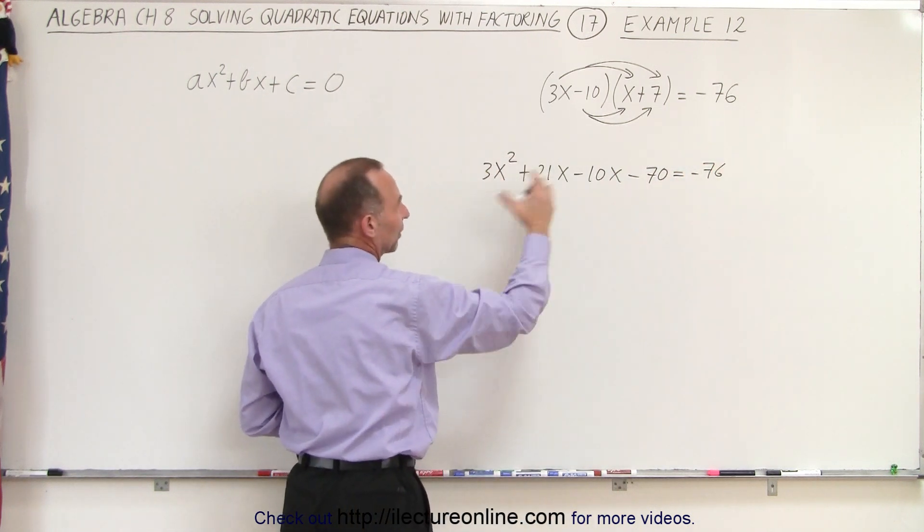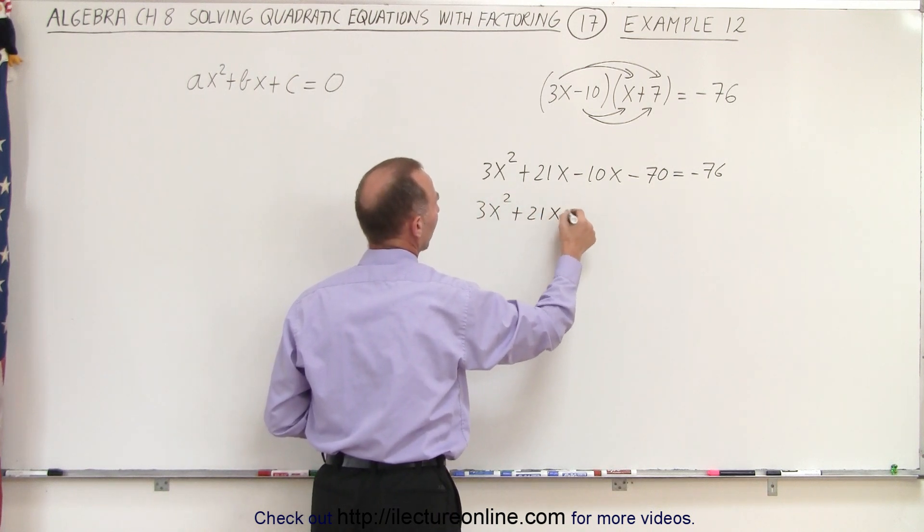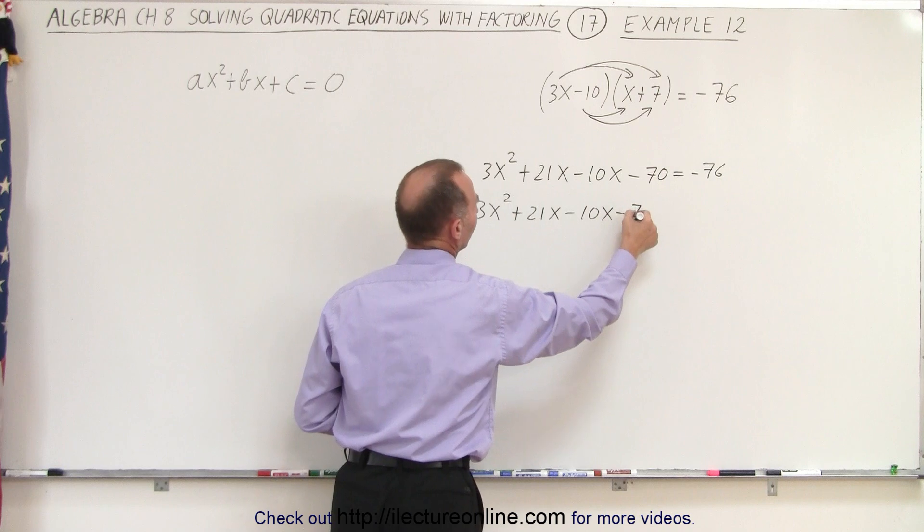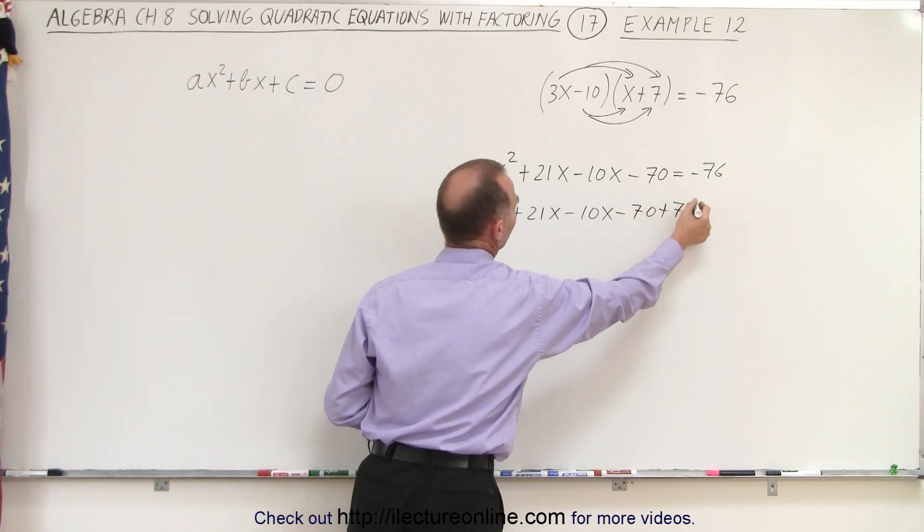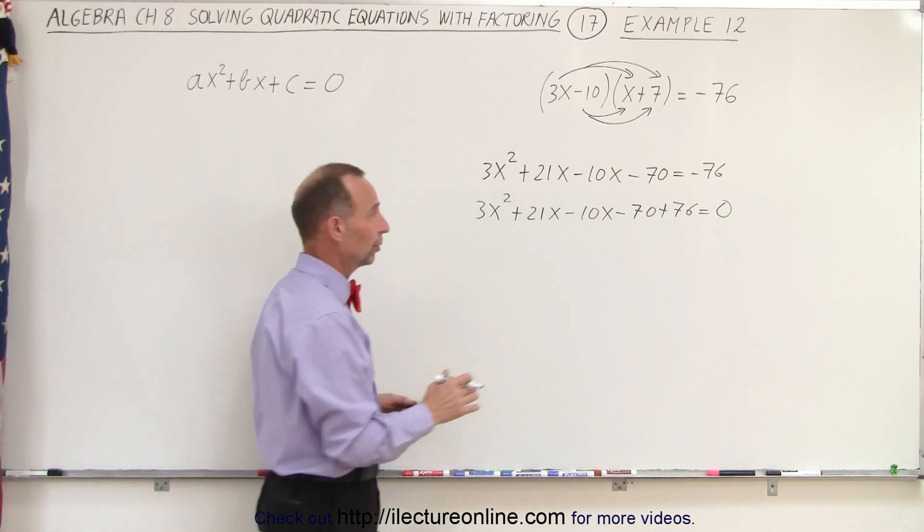Then we move everything over to one side. So we get 3x squared plus 21x minus 10x minus 70 plus 76 equal to 0. And now we just simply add the common terms.